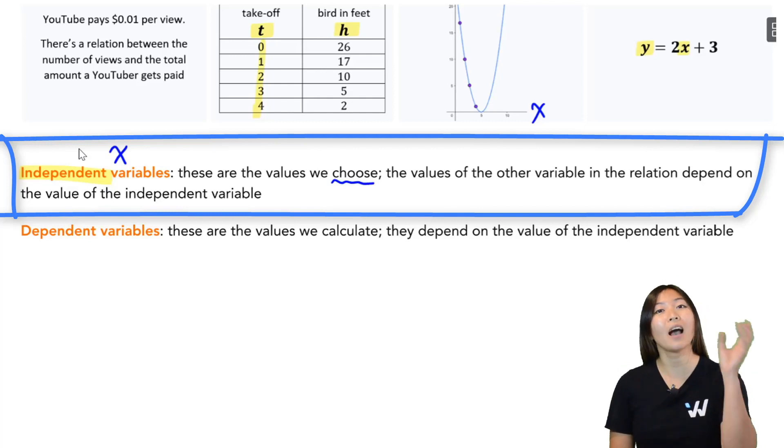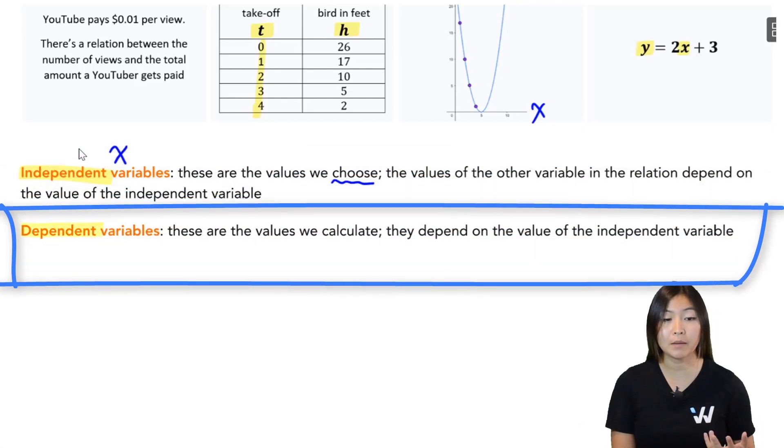And then the values of the other variable are calculated based on this independent variable. And then the other variable has the name dependent variable. So these are the values that we calculate. So these are usually our y values, if we're looking at an x, y variable relationship, and these values are calculated based on the value of the independent variable.